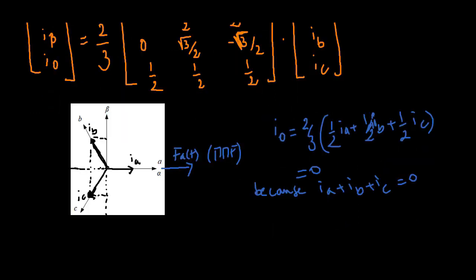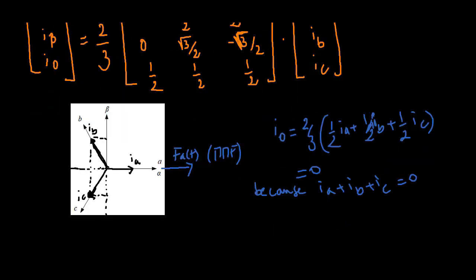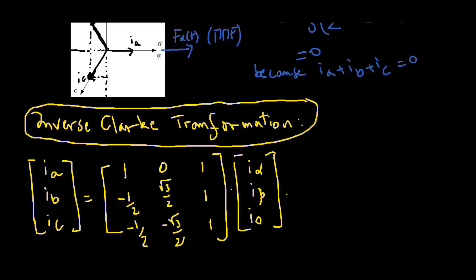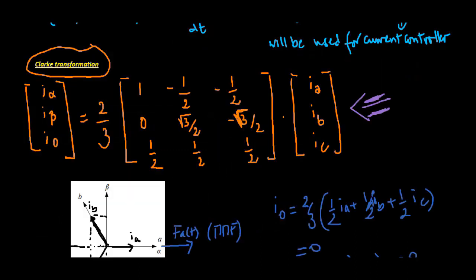Conversely, the inverse Clark transformation is defined accordingly. Current and voltage variables in the alpha-beta reference frame are all sinusoidal in nature, because they are directly related to their original three-phase current and voltage variables.